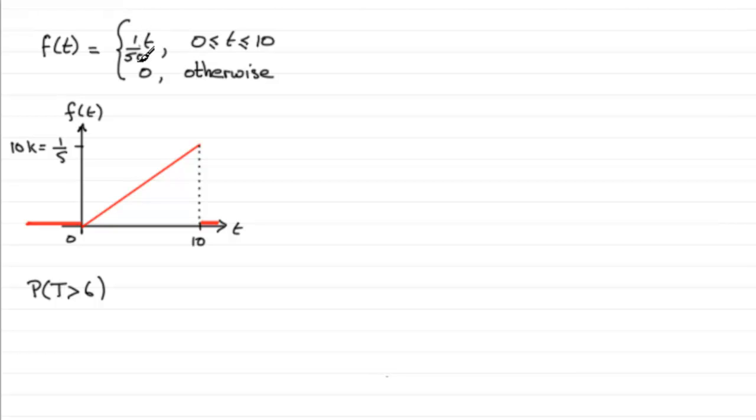So I've replaced this as t/50, and also when I drew the probability density function, this value up here was 10k. So if k is 1/50th, we now end up with 1/5 for this value here.